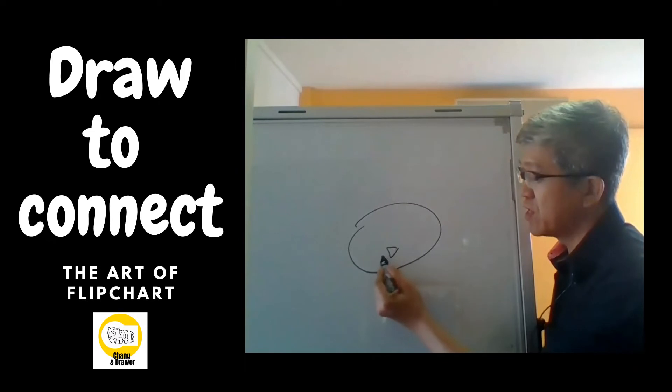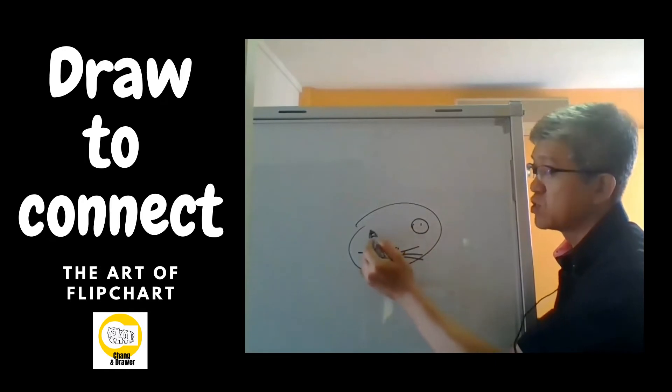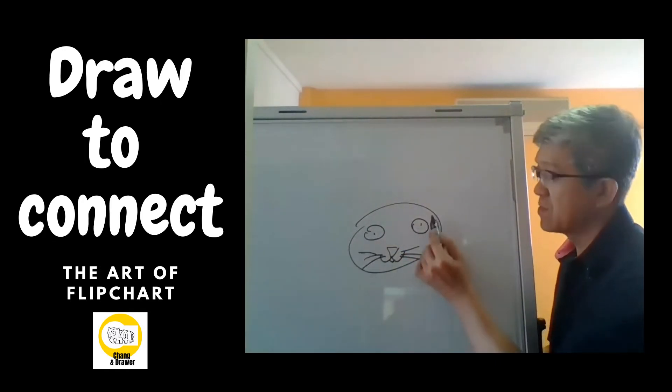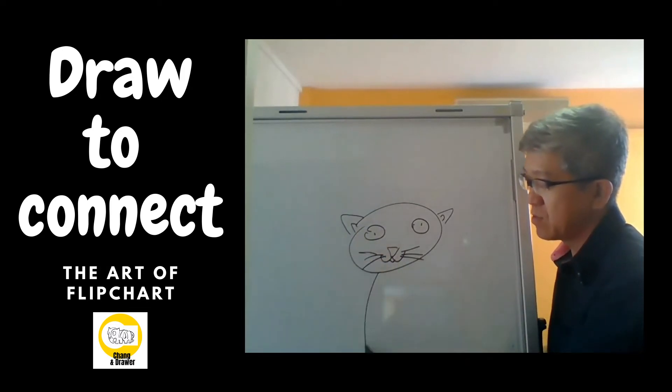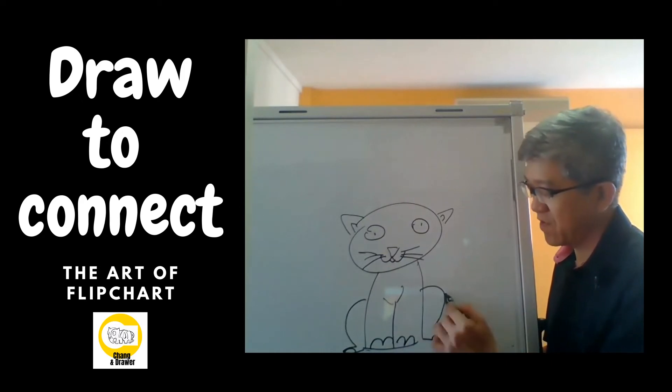So first we draw an upside down triangle, then we draw the letter U here. We draw two circles, and then we put the ears here. We put the inverted jaw, and we draw the letter three and the letter E here. There you are, we have a cat.